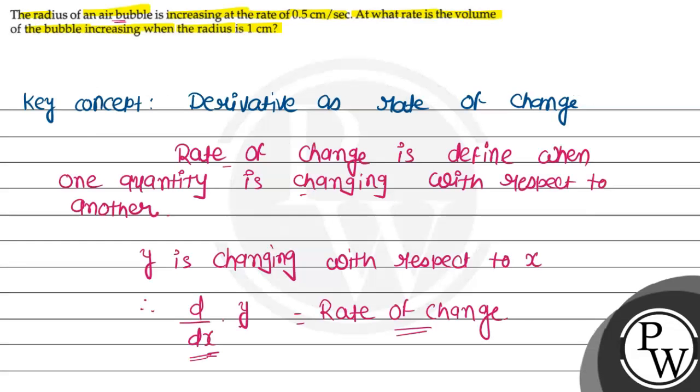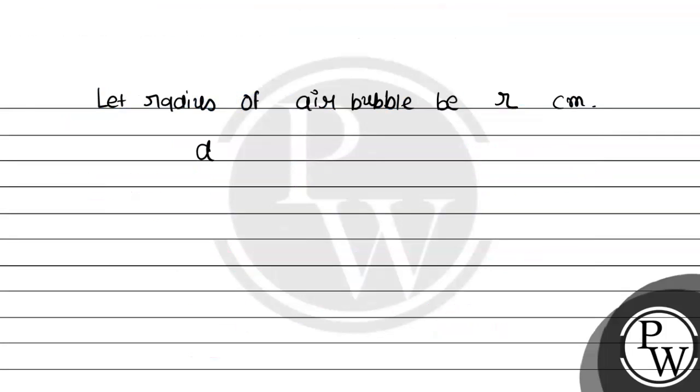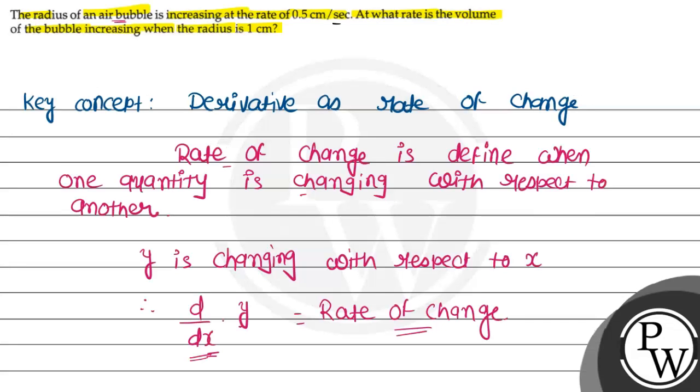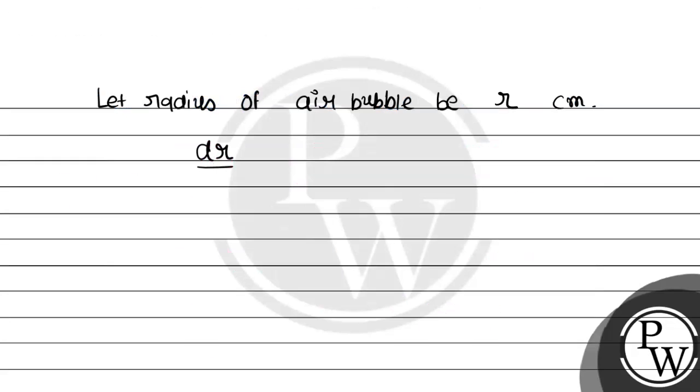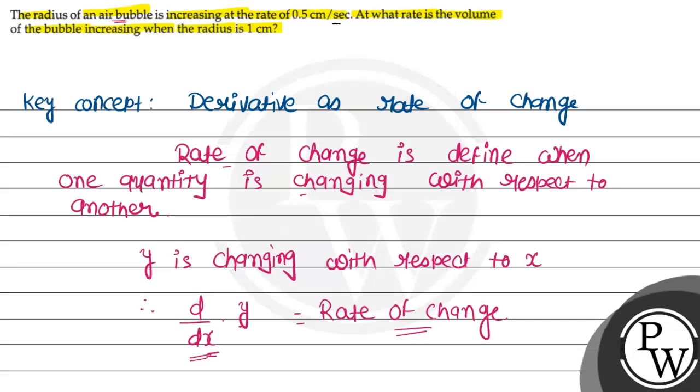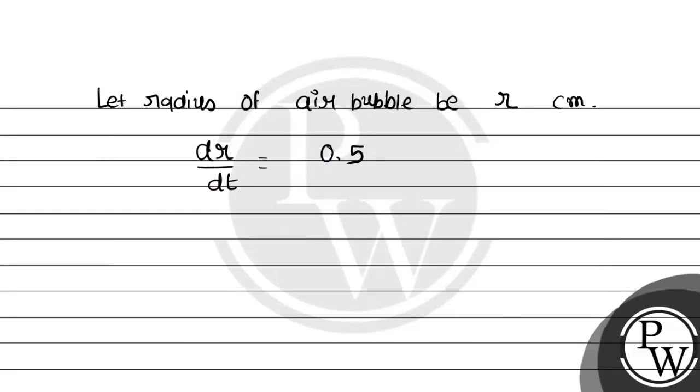Now, it is given that the radius of the air bubble is increasing, means the rate of change of r with respect to time. So dr/dt, the value is 0.5 cm per second.